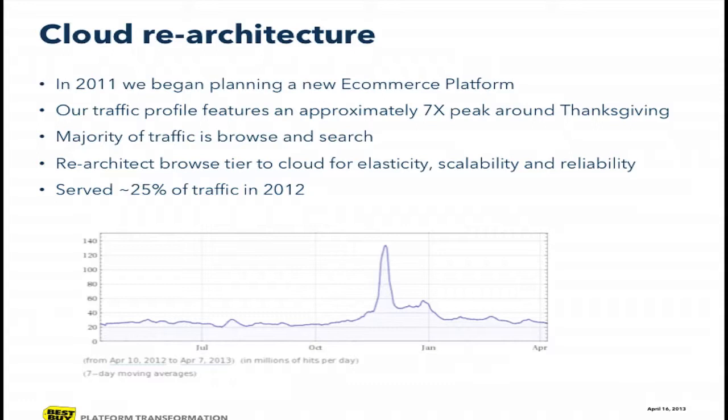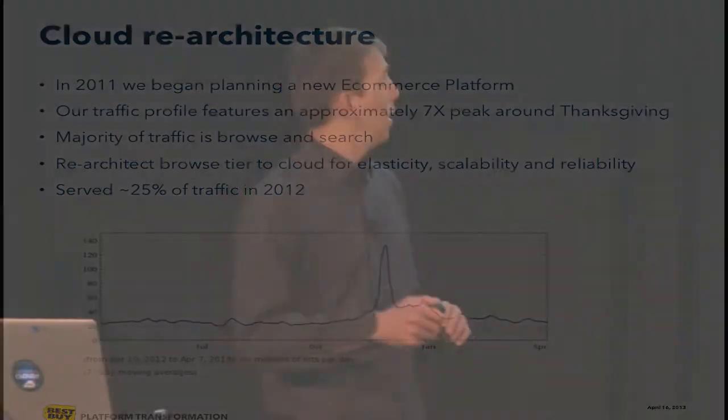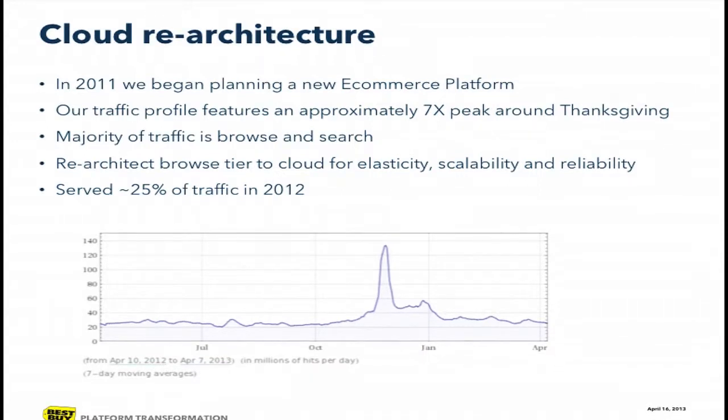We had a cloud re-architecture. We're in the process of re-architecting bestbuy.com and turning it into a new e-commerce platform. A very large amount of our traffic — what we call browse and search, people coming into the site looking at stuff and searching for products — that's upwards of 90% of our traffic. As you can see from this graph pulled off Wolfram Alpha, our traffic spike around Thanksgiving is about seven times our normal traffic. It's quite obvious that elastically scaling our browse and search platform and only using that many resources for one week of the year is much better in a cloud than trying to build it out in our data center, which is something we've done every year prior.